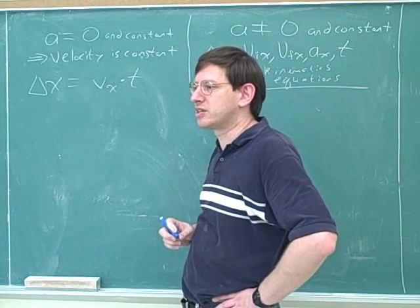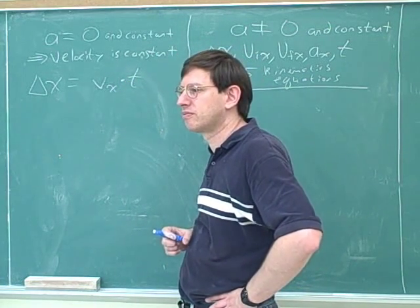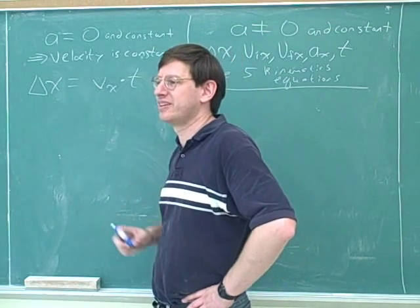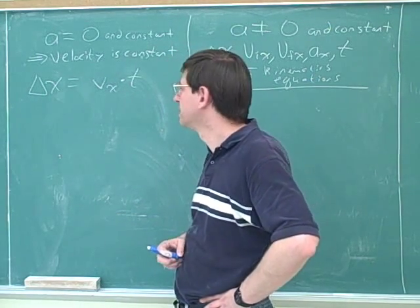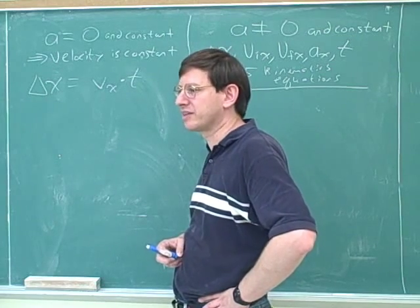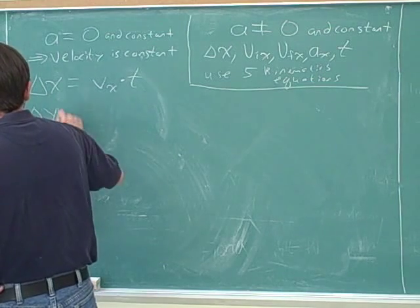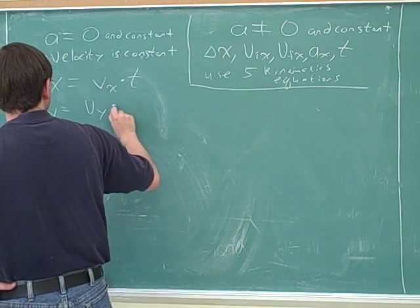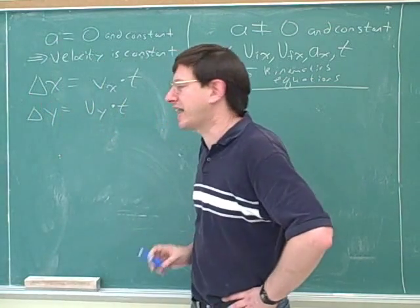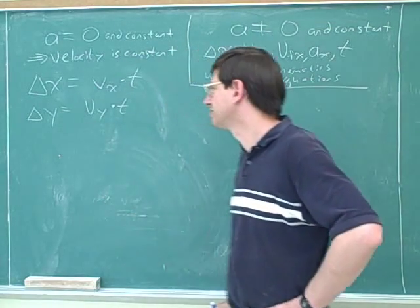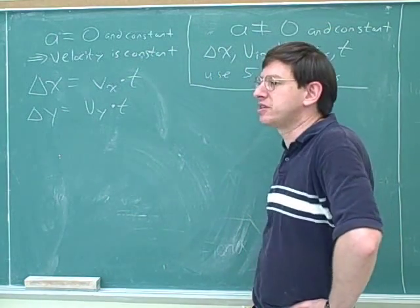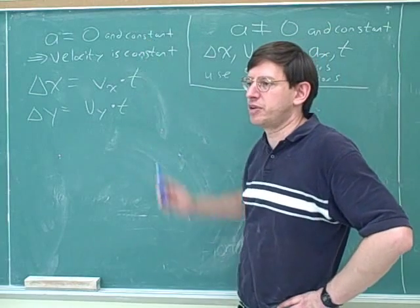This is the whole equation. Distance equals rate times time. So the change in displacement equals... The displacement. Yeah. The displacement. Right. Equals the velocity times time. That's right. Also, there's a y version of this. If you're dealing with the y-axis, you would write it like this. But these are the only equations you need when the acceleration is zero.